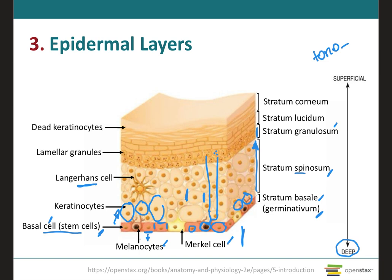Another important feature of the cells in the stratum granulosum is the presence of darkly staining protein granules called keratohyalin, which is involved in assembling the keratin intermediate filaments into keratin. Also present are membrane-enclosed lamellar granules, which fuse with the plasma membrane and release a lipid-rich secretion. This secretion is deposited in the spaces between the cells of three epidermal layers — the stratum granulosum, the stratum lucidum, and the stratum corneum — and acts as a water-repellent sealant that prevents the loss of body fluids and the entry of foreign materials.